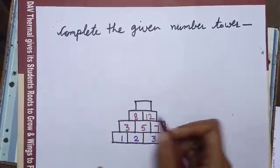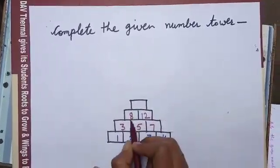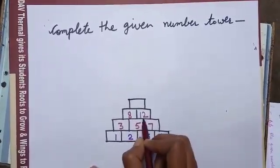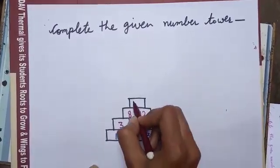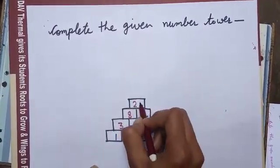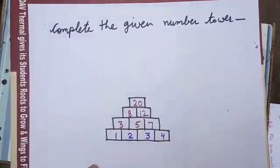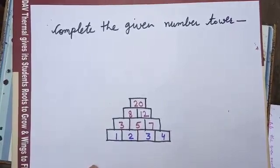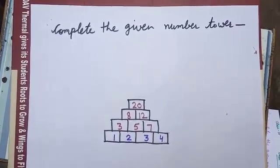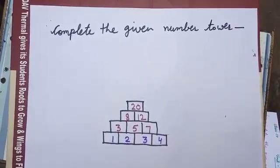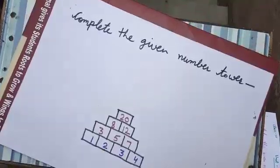Now to fill this box I will add 8 and 12. 8 plus 12, 20. In this way we can complete the given number tower. I hope the concept is clear to you.